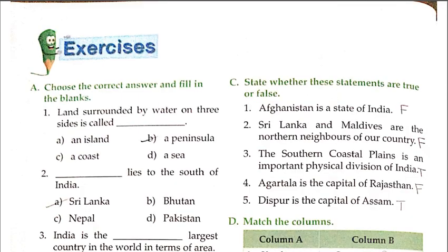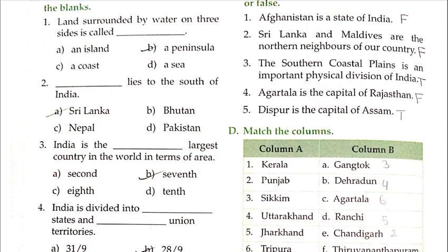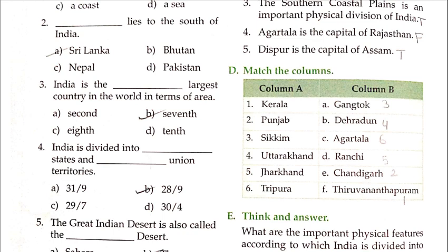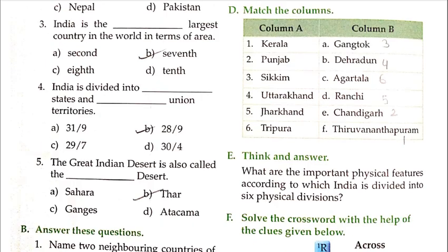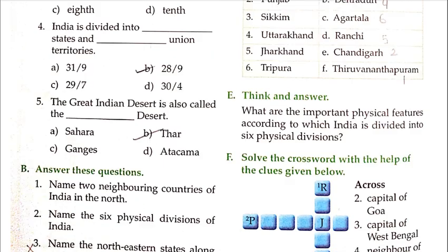Coming to the exercise — Fill in the blanks: 1) The land surrounded by water on three sides is called a peninsula. You will write this in your copy. 2) Sri Lanka lies to the south of India. 3) India is the 7th largest country in the world in terms of area. 4) India is divided into 28 states and 9 union territories. 5) The Great Indian Desert is also called the Thar Desert.